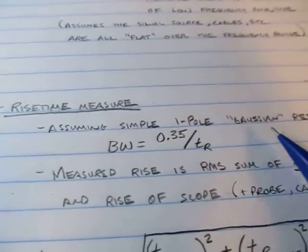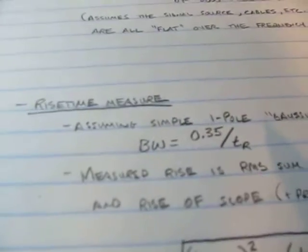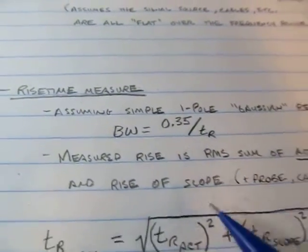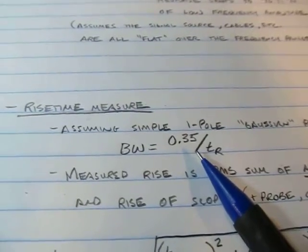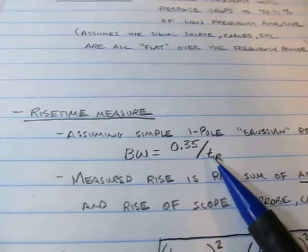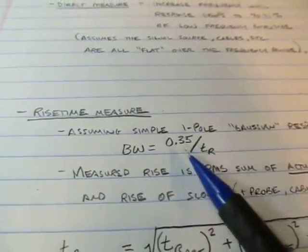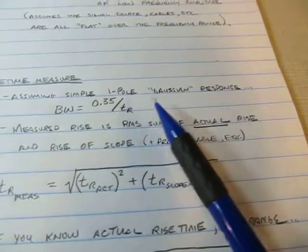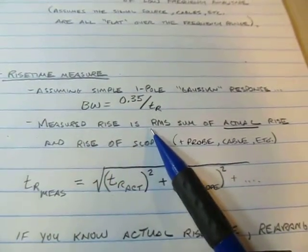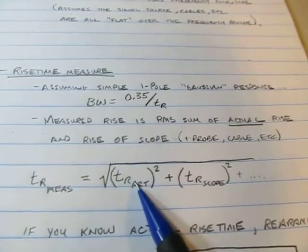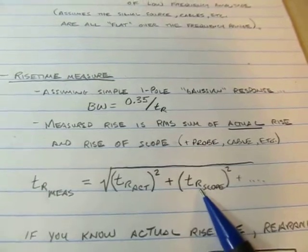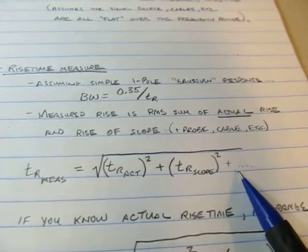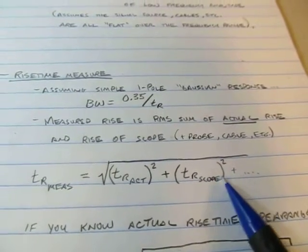This assumes a single pole roll-off type of response, which may or may not be true for the scope you're using, so use this with care — it's really just good as an estimate. Now if you don't have access to an extremely fast rising edge, your rise time is probably going to be in the same neighborhood as the scope's. The way to account for that is that the measured rise time is essentially the RMS sum of the actual rise time of the signal, plus the actual rise time of the scope, plus any rise time of cables or probes attached. In this case the cables have a couple of gigahertz of bandwidth, so we're okay.